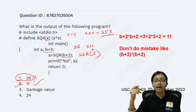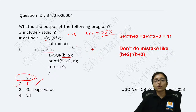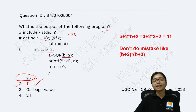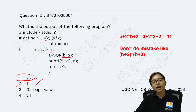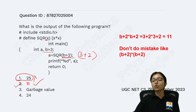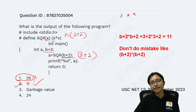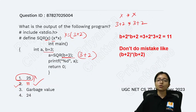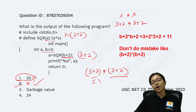Why is the answer 11? Because at the time of passing an argument, you should not do any calculation. Just send it as a string — as it is. That means b plus 2: you have to send 3 plus 2 as the argument, exactly as it is. So x equals 3 plus 2. Now when you expand x multiplied by x, you get 3 plus 2 multiplied by 3 plus 2. Do not put brackets here — that is another common mistake.